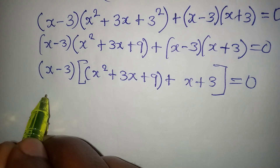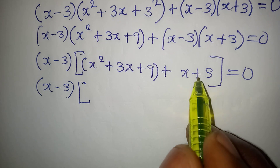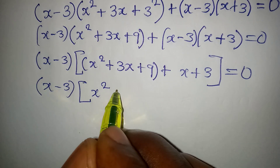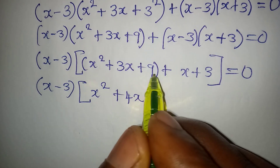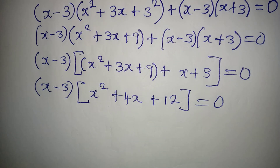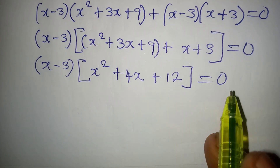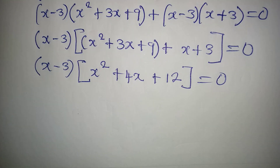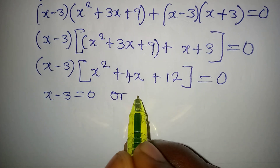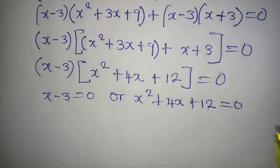We're not multiplying because of the addition. Inside the bracket we add the like terms: x² remains, 3x + x gives 4x, and 9 + 3 gives 12, so we have (x − 3)(x² + 4x + 12) = 0. Applying the zero product rule, either x − 3 = 0 or x² + 4x + 12 = 0.